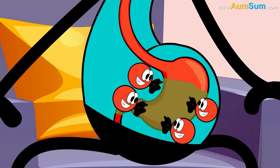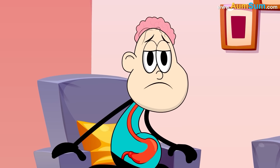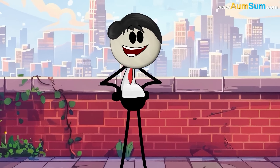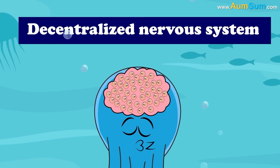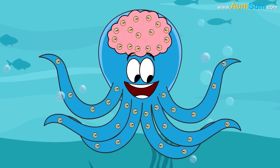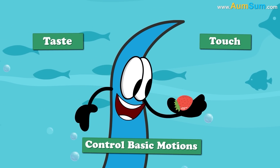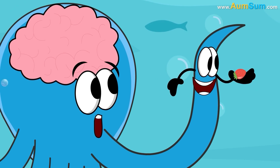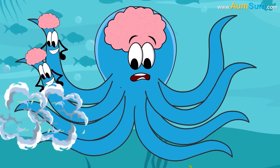Finally, the stomach and other abdominal muscles forcefully push the contents upwards, and we puke. Does an octopus have nine brains? An octopus has a decentralized nervous system, with the majority of its neurons residing in its arms. These neurons help the arms to independently taste, touch, and control basic motions without consulting the actual brain in its head. Thus, it gives an impression of having nine brains, when in reality it only has one.